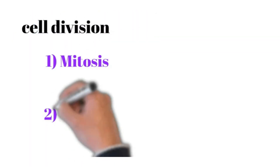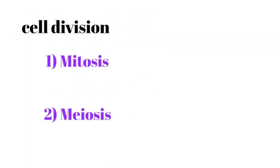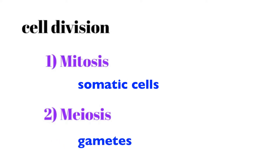Mitosis is cell division that produces somatic cells. Somatic cells are all cells in the body other than gametes. Gametes are our sex cells, which are egg or sperm. Eggs are also known as ova, or ovum in the singular. Meiosis is the process of producing gametes — sperm cells or egg cells, otherwise known as ova.